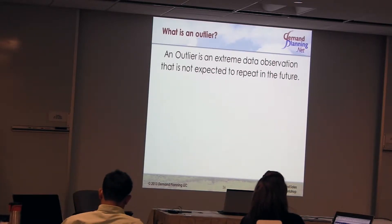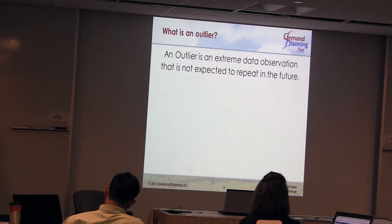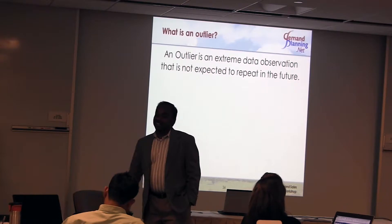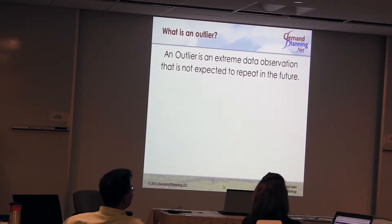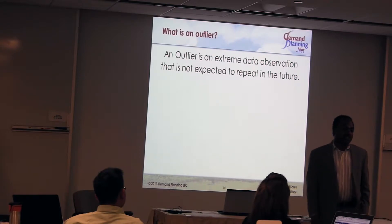There are some extreme observations that can actually repeat in the future, and maybe they have repeated in the past. You may have had an outrageous promotion every April — on April Fool's Day you have a promotion that says buy one, get ten free. Sales for April goes through the roof, and that happens every April. So your sales is now 10 times the average monthly sales in April.